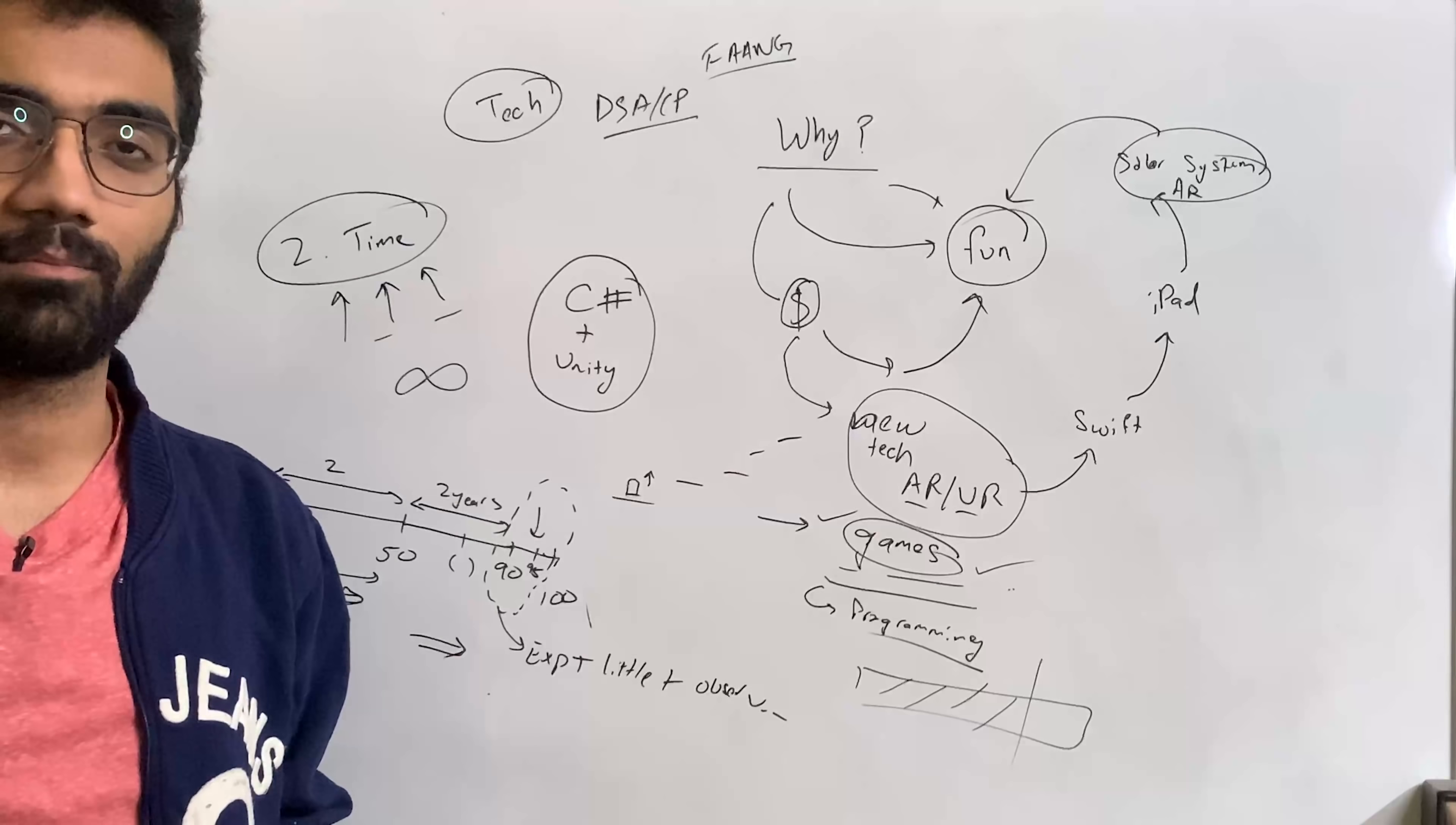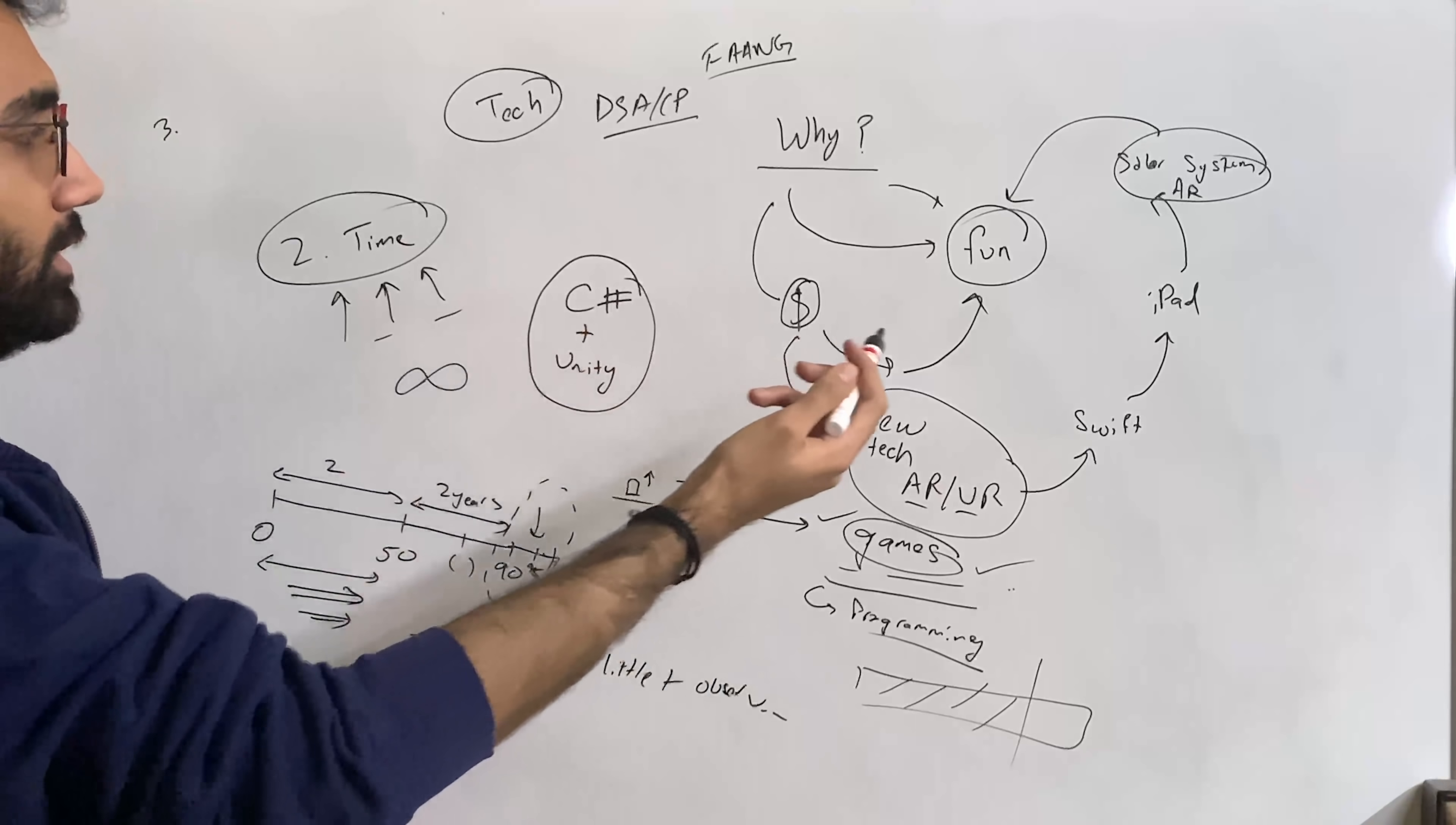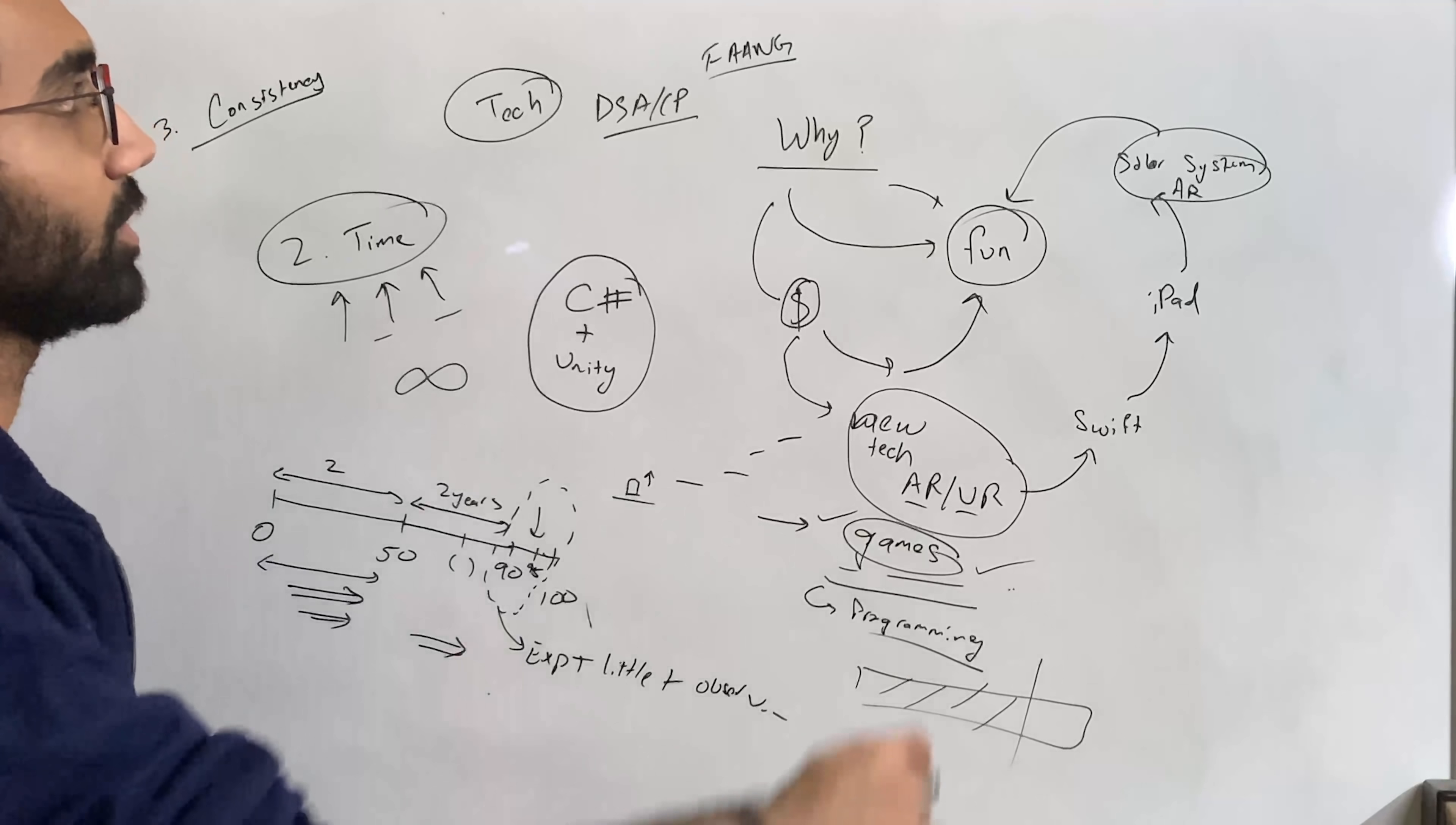We have the fun part covered, we have the time part covered - two very important things. The third part, which is probably the most important, is consistency over time. Time wouldn't matter a lot if you just code once a week. How do you get consistent? You get consistent if you're having fun. You don't get consistent because of fear.